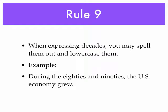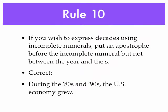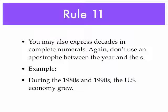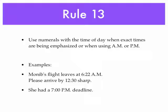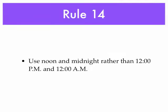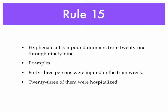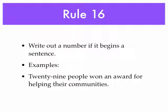For dates, when expressing decades you can spell them out. If you wish to express decades using incomplete numerals, put an apostrophe. You can also express decades in numerals. Spell out the time of day, but use numerals with the time of day when exact times are being emphasized, or use a.m. or p.m. Use noon and midnight rather than 12 p.m. and 12 a.m. — everybody gets confused on that. Hyphenate all compound numbers, and write out a number if it begins a sentence. That's really important — I so often see students write a sentence beginning with a numeral. Write it out.